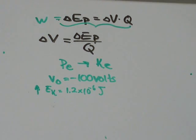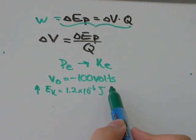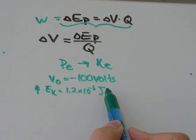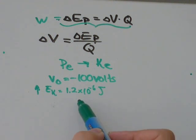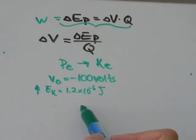We've got the question: an electron starts moving from a point where the electric potential was negative 100 volts and it moves to a new point. As it moves, the kinetic energy increases by 1.2 times 10 to the negative 6 joules, and we want to know what is the electric potential at its new location.